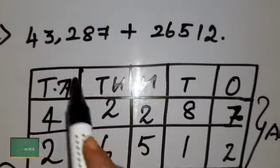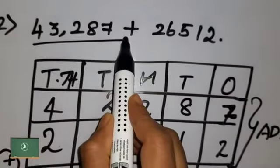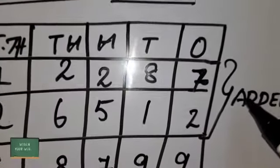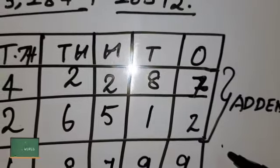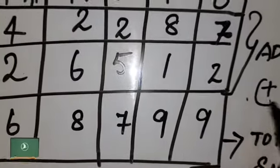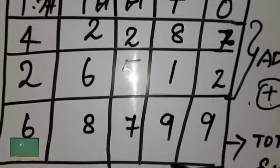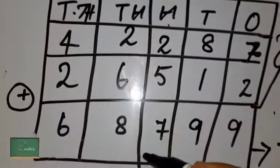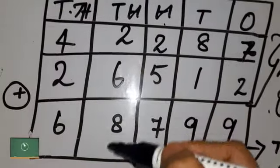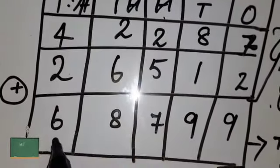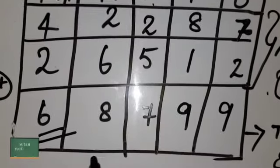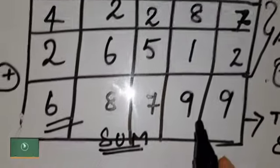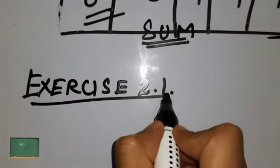Here is the second example. The given addends are 43,287 plus 26,512. I have already written them according to their place values. Now let's calculate: 7 plus 2 is 9; 8 plus 1 is 9; 2 plus 5 is 7; 6 plus 2 is 8; 4 plus 2 is 6. So the sum is 69,799.